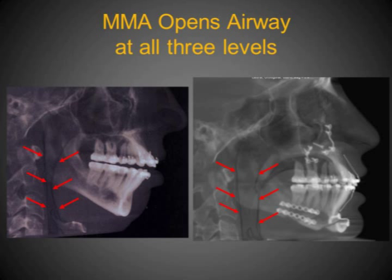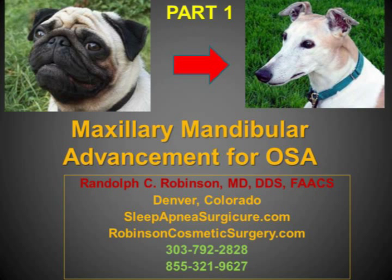In another patient, you can see the narrowness of the airway because the overall face is deficient. By advancing the entire face, the airway can be opened. This concludes Part 1; Part 2 will give further explanation and a patient example. Thank you for your attention.